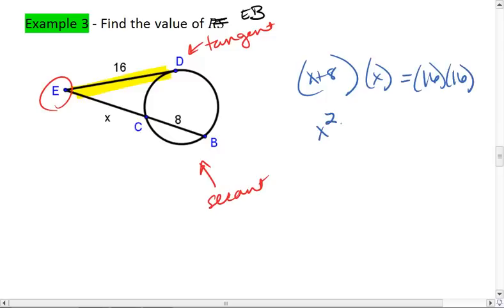So I get x squared plus 8x, by distributing, equals 16 times 16. It's going to be 256. Because I only have 1x squared, this isn't going to cancel. So what I end up with is x squared plus 8x minus 256, all on one side, equals 0. This is a quadratic equation.